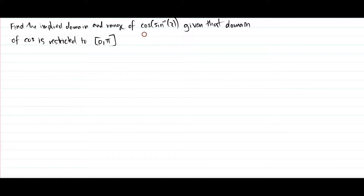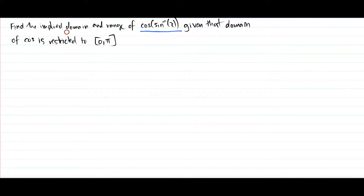So what's so hard about this question? Well, the problem is you have a composite function, which is cos(sin⁻¹). We're supposed to find the implied domain and range of this graph. How do we do that?